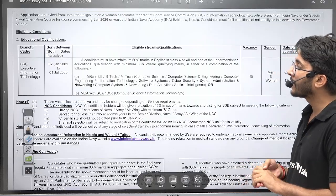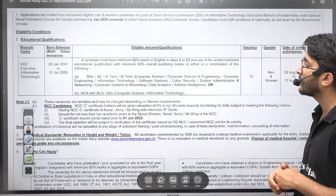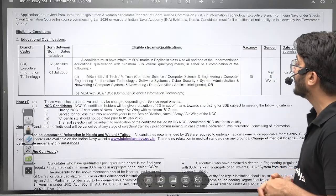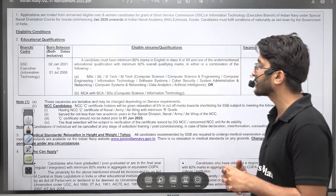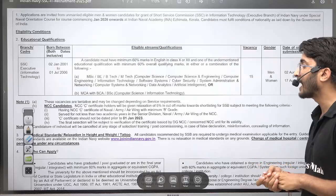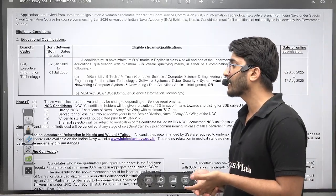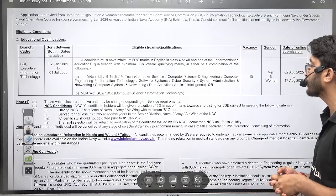The eligible streams are B.Tech, M.Tech Computer Science, Computer Science and Engineering, Computer Engineering, Information Technology, Software Systems, Cyber Security, System Administration, Computer Systems, Networking, Data Analytics, Artificial Intelligence and all. If you have MCA degree after your BCA or BSC in Computer Science, you are also eligible to apply.